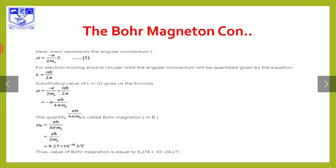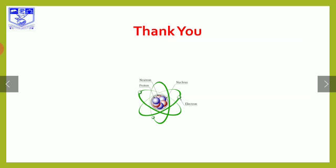Substituting the value of h-bar, h-bar is equal to h divided by 2π. Substituting into the expression eℏ / 2mₑ, the Bohr magnetron value is calculated as 9.274 × 10⁻²⁴ joules per tesla. This value of the Bohr magnetron is equal to 9.274 × 10⁻²⁴ joules per tesla. Thank you all for your kind attention.